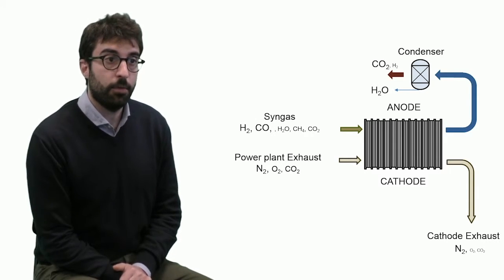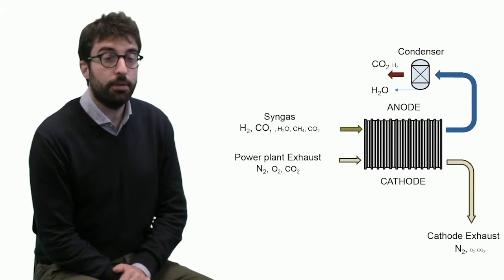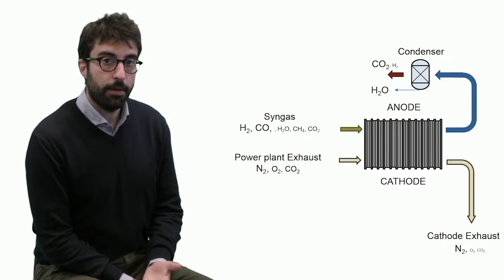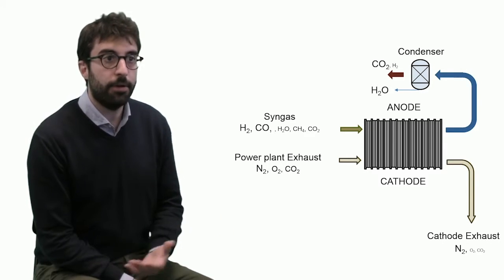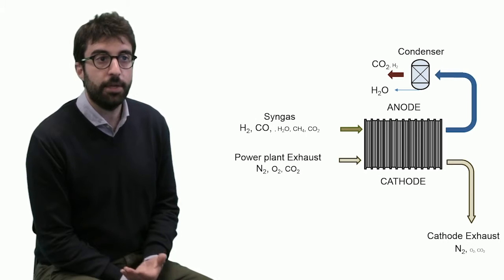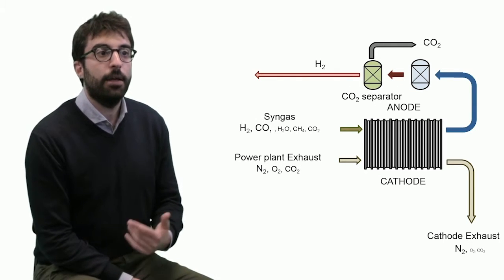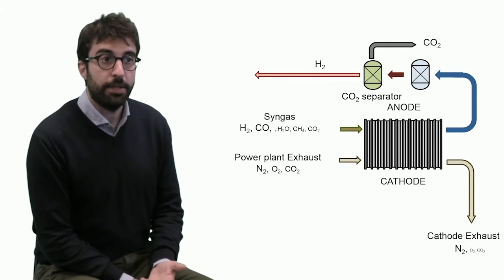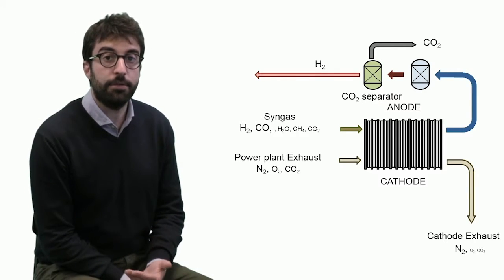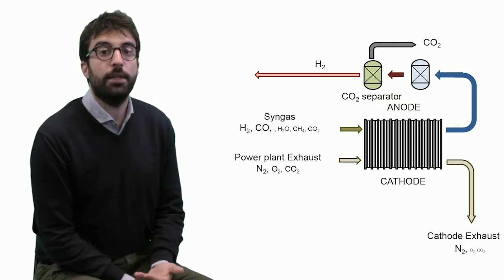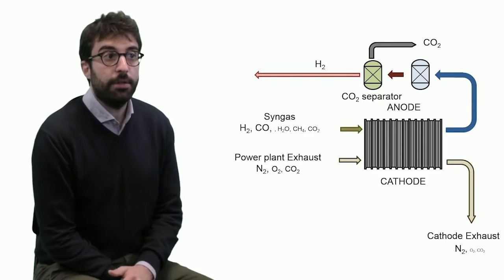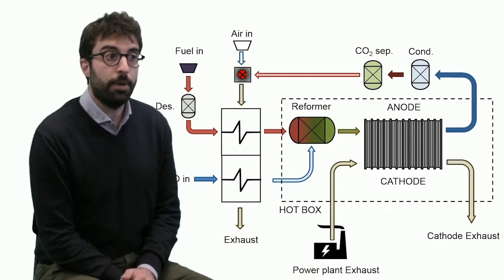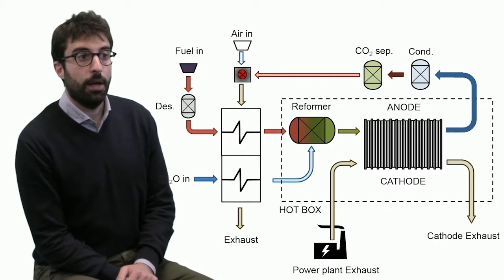In this case, we will not need to feed the cathode with the exhaust of the burner, but we need a two-step process. We need a condenser to separate the steam and then a CO2 separator that allows to separate carbon dioxide. But in this case, it's much easier because the mixture does not contain any nitrogen. What is left is hydrogen that we can usually burn to make all the thermal balance of the system as described above.